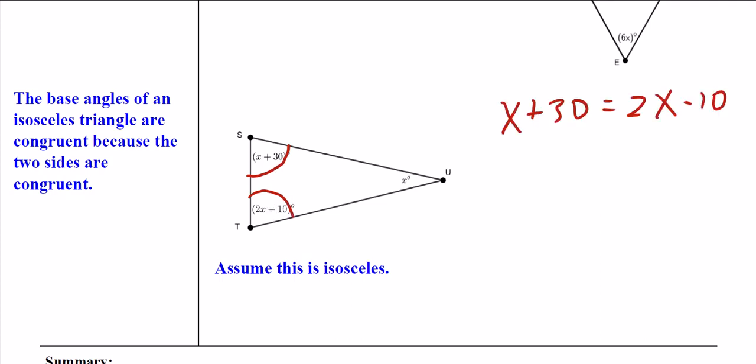We need to be careful because the only triangles that we know anything about for sure are right triangles that have a 90 degree angle and equiangular triangles where each of the angles is 60 degrees. Otherwise we do not know anything else.